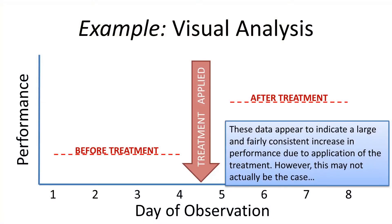Here's another way to look at it. You could just average the before-treatment measurements and the after-treatment measurements to get this kind of comparison. This very clearly shows a pretty big difference. But whenever you simplify data like this — whenever you use statistics instead of the raw data — you're always going to be losing something. So in general you want to try to avoid simplifying your data if possible.